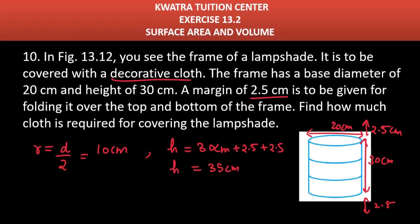Now, how much cloth is required for covering the lampshade? Keep in mind, we have to add 2.5 cm on both sides to the 30 cm height. So the total height is 35 cm.